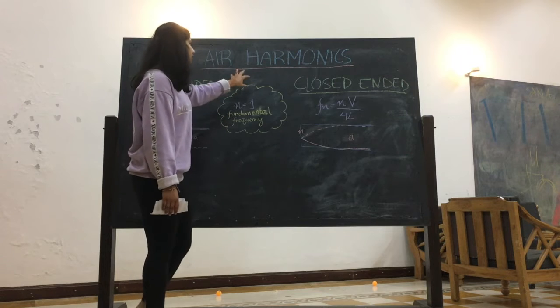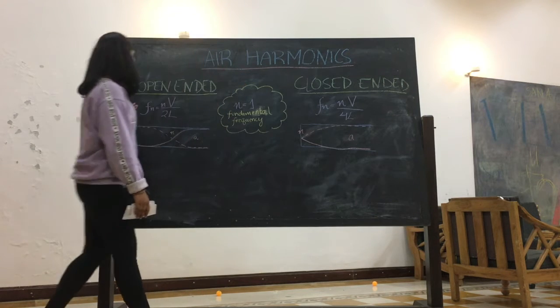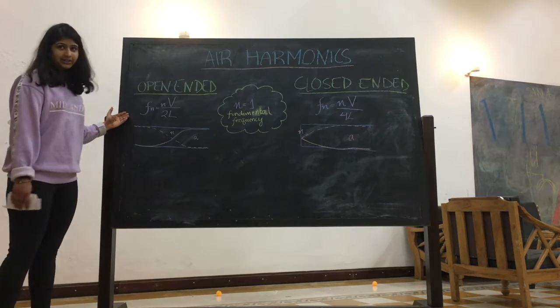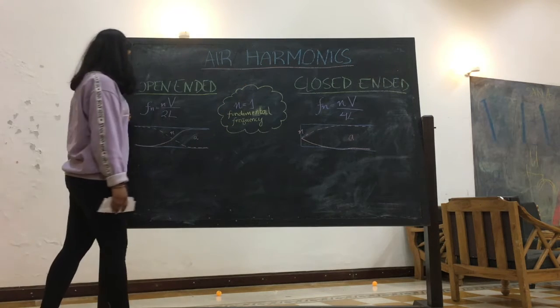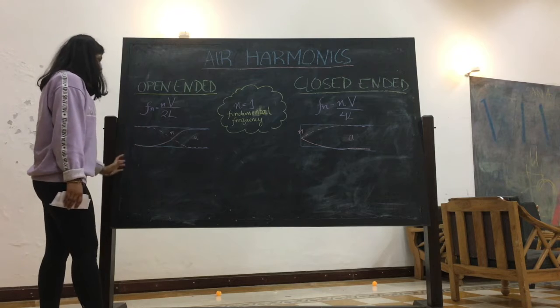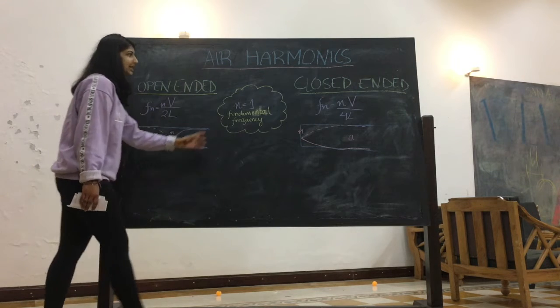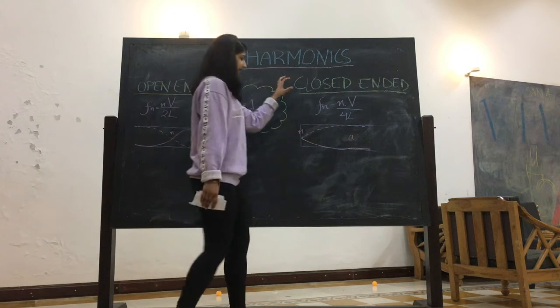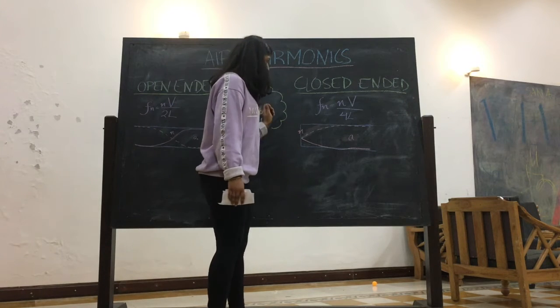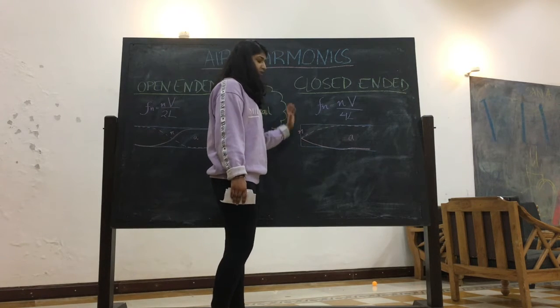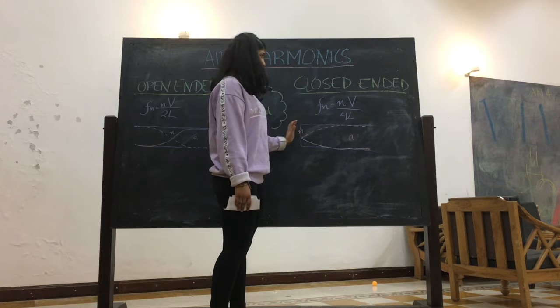When we're looking at air harmonics, there's two kinds. There's the open-ended pipe, where the pipe is open from both ends, and then there's the closed-ended, where when we're hitting the pipe, it's closed from one side.